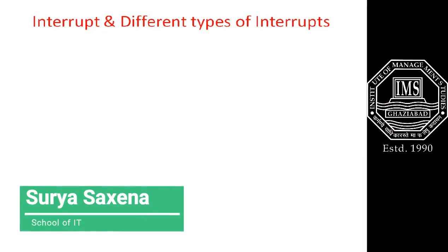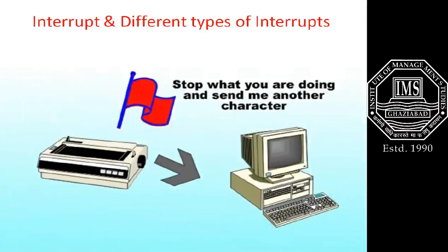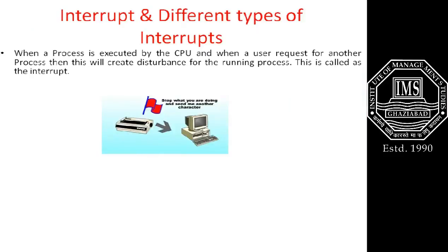What is an interrupt? When a computer or processor is busy performing a certain task and at the same time any other request comes to the processor, that new request works as an interrupt for the current running task. We can also say that when a process is being executed by the CPU and a user requests another process, this new request creates a disturbance for the current running process — this is called an interrupt.